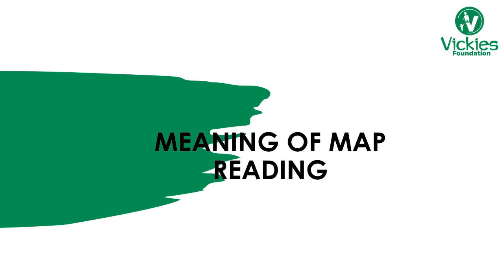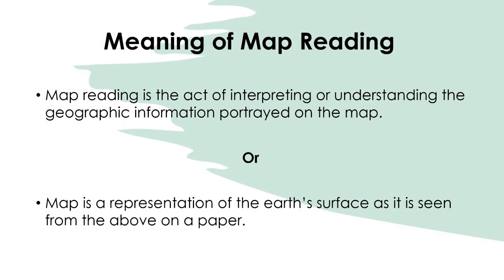First and foremost, what is map reading? Map reading is the act of interpreting and understanding the geographical information portrayed on a map — taking what is on the map and using it on the ground. You can also say a map is a representation of the Earth's surface as seen from above, drawn on paper, and what you see on the paper is what you represent on the ground.